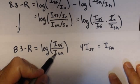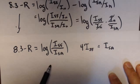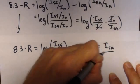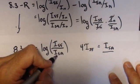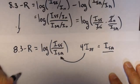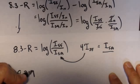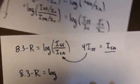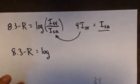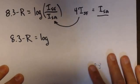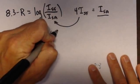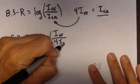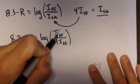What I'm going to do is a substitution. I'm going to be able to plug this in right here because I know I_SA is four times I_SF. This guy is going to go in right here. So, 8.3 minus R equals the log of, we now have enough information to solve this, the intensity of the San Francisco earthquake over four times the intensity of the San Francisco earthquake because those will cancel.